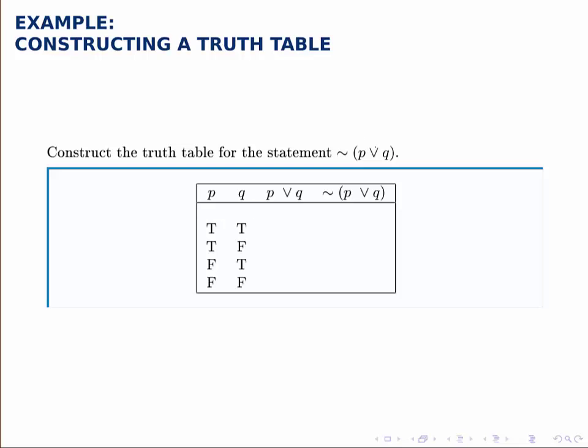Because of the order of operations here, we first take P or Q - that's the next column we'll fill in - and then we simply negate that column.